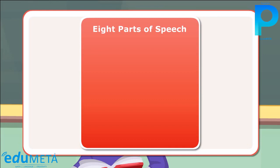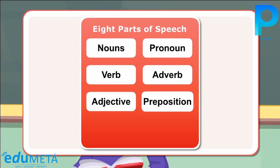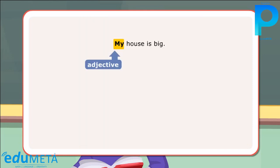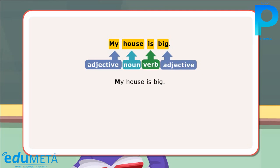These are nouns, pronoun, verb, adverb, adjective, preposition, conjunction, and interjection. Example: 'My' — adjective, 'house' — noun, 'is' — verb, 'big' — adjective. The first letter of each sentence must be capitalized. Example: 'M' in 'My'.